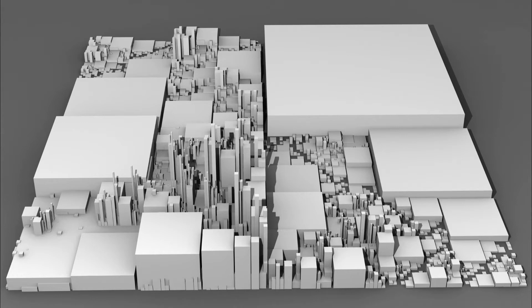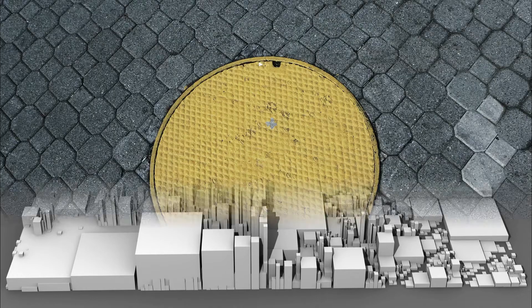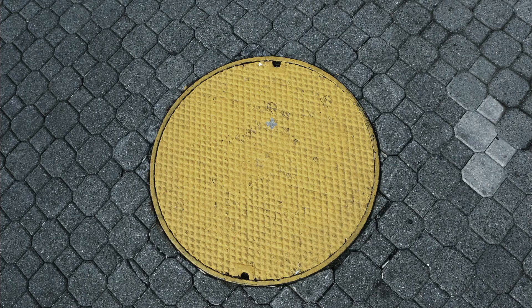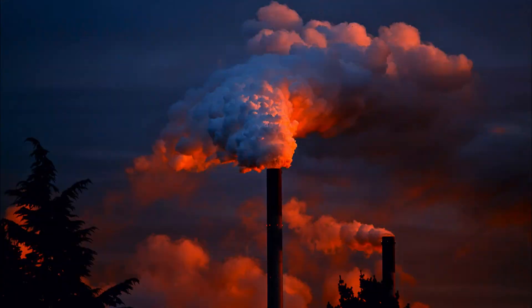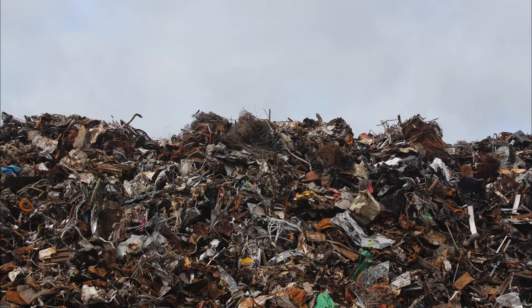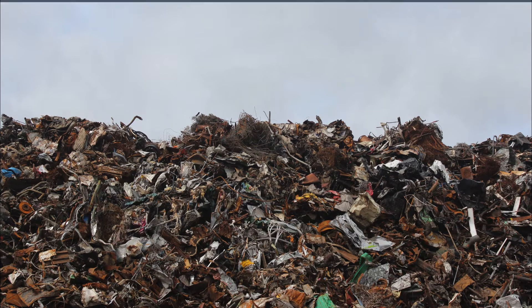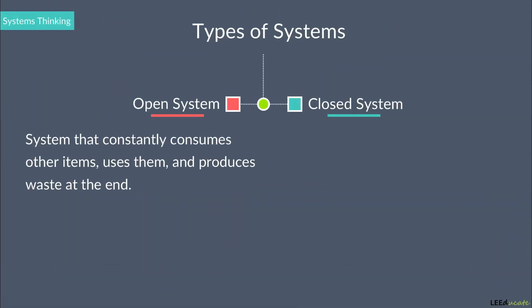However, while a city uses products, it also produces wastes in turn, often in the form of sewage, pollution, and solid waste, which consequently marks the end of the system. There are no feedback loops in the open systems.